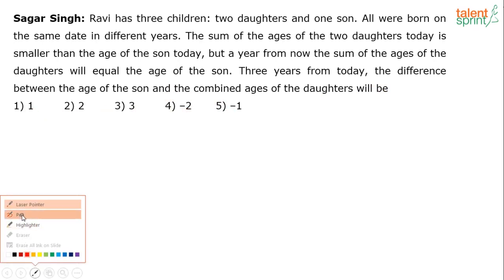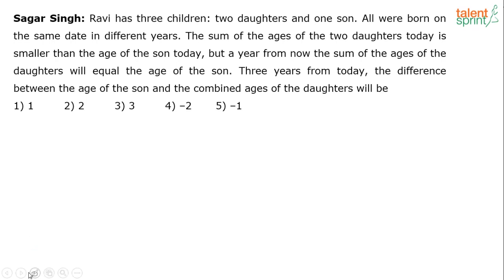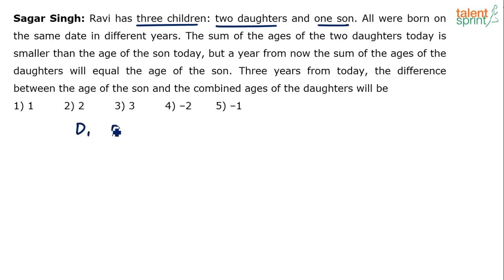So let's take this up. If you just try to highlight the important points: this guy Ravi has got three children, two daughters and one son. Since it is about ages, let's assume the ages of the daughters are D1 and D2, and the age of the son is S. These are their current present ages: D1, D2, and S.